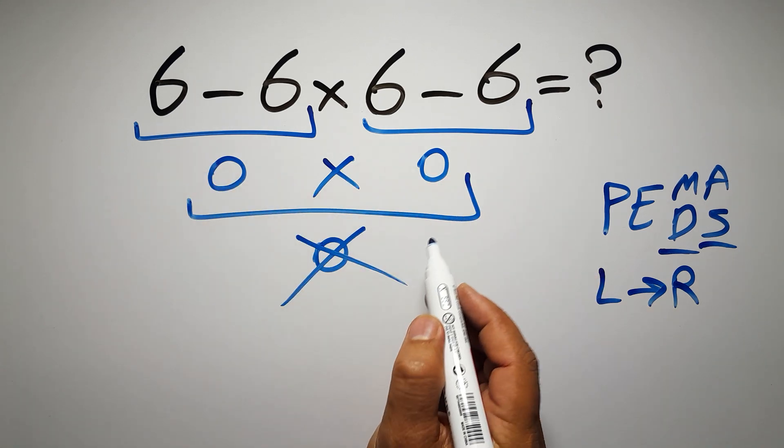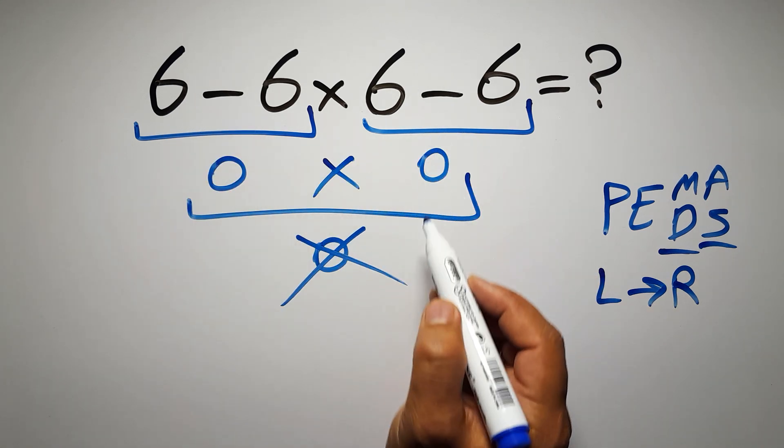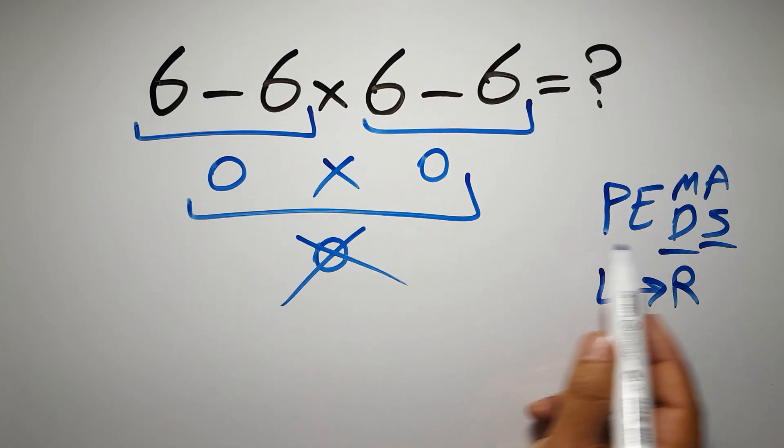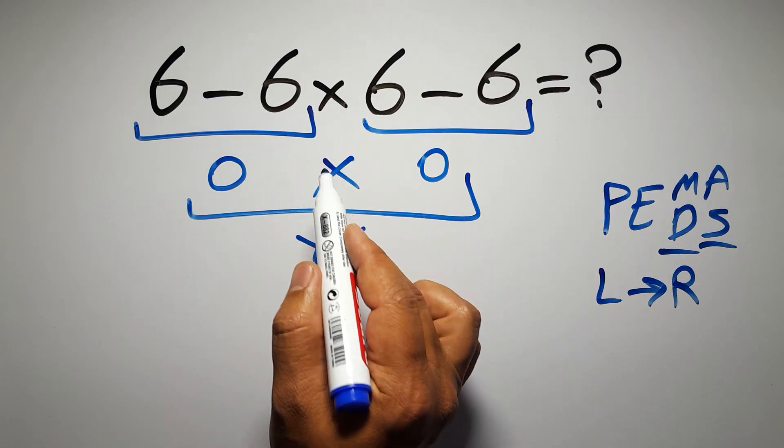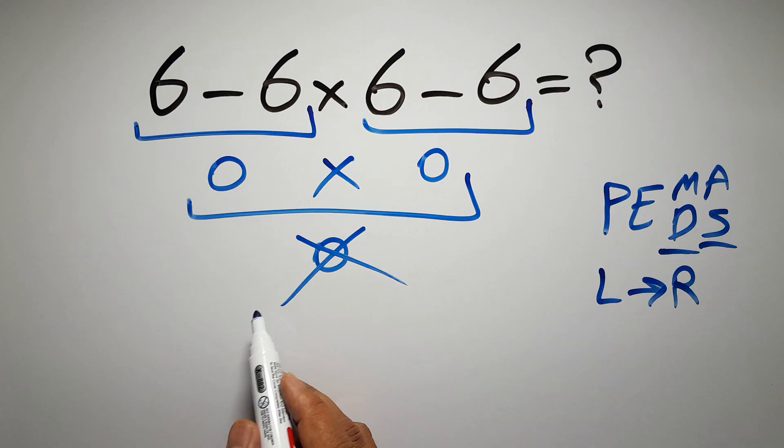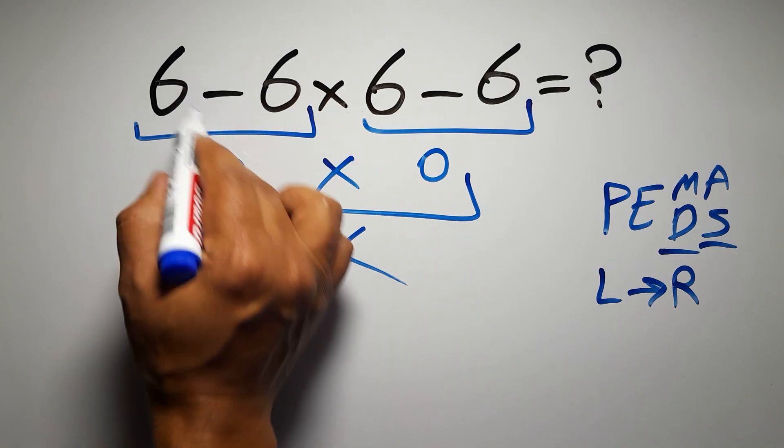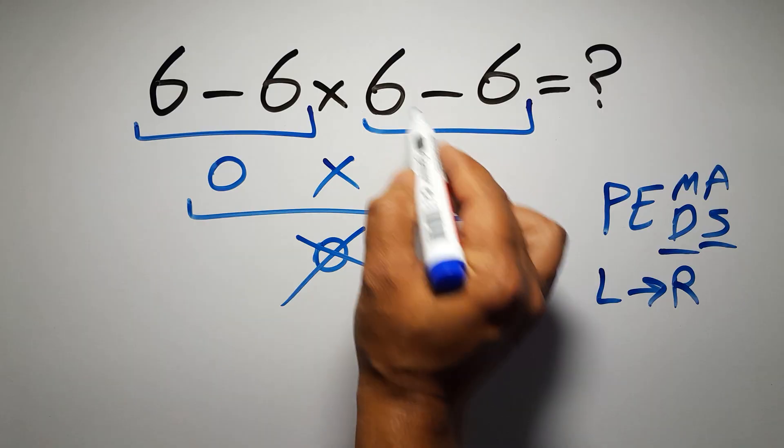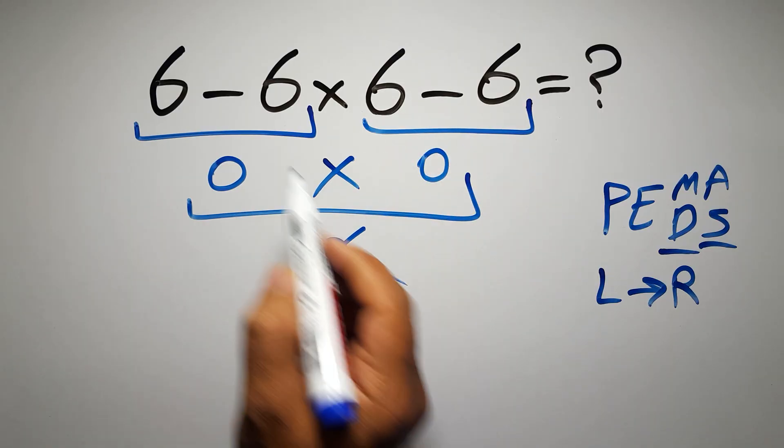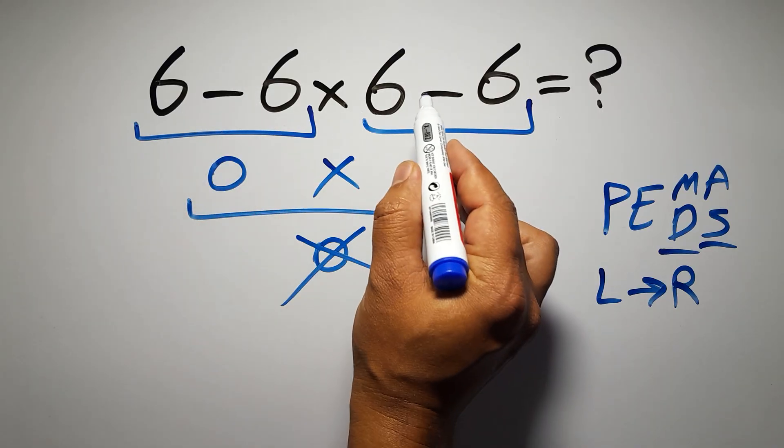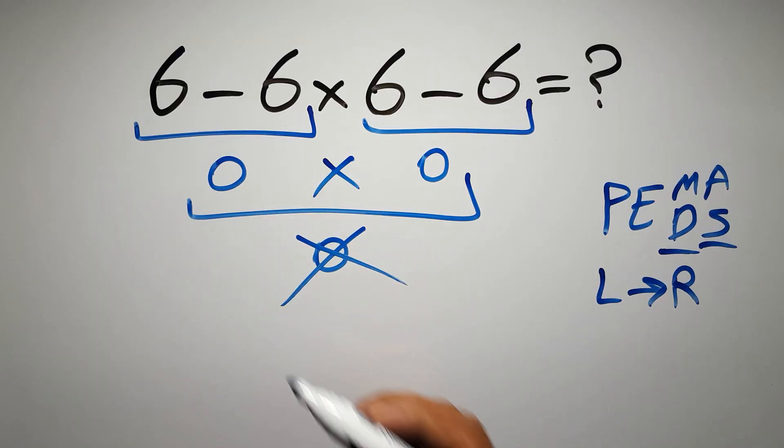In this expression, we have two subtractions and one multiplication. According to PEMDAS, multiplication has higher priority than subtraction, so first we have to do this multiplication, then this subtraction, and finally this subtraction. If we do either subtraction before the multiplication, it is wrong.